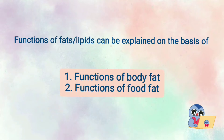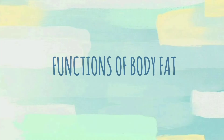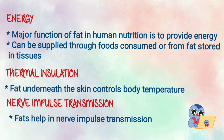Functions of fats or lipids can be explained on the basis of: first, functions of body fat, and second, functions of food fat. Let us discuss about each of them one by one. The primary function of body fat is to provide energy for bodily function, and this energy is supplied through food or through the fat that is stored in the tissues or beneath the tissues.